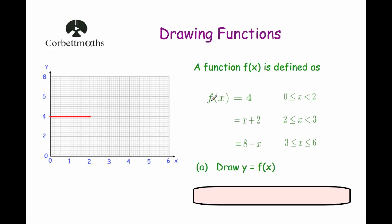Next we're going to draw f of x equals x plus 2 for x bigger than or equal to 2 but less than 3. This is a straight line with a gradient of 1 and a y-intercept of 2. Putting in x equals 2 we get 2 plus 2 equals 4, so it joins up nicely. It then rises with a gradient of 1.